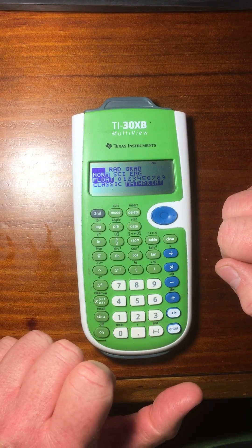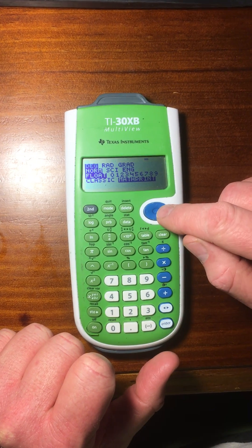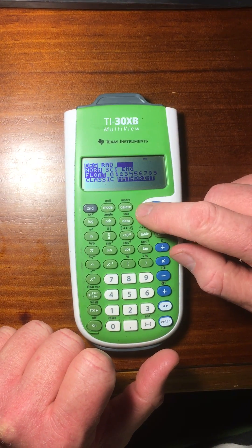So, quite simply, press mode. You can see you change to degrees, radians, and gradient.